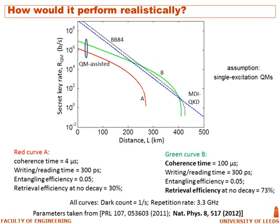In our paper, we have done a thorough key rate analysis accounting for all sorts of non-idealities that could exist in a realistic experimental setup, and we have tested our results using reported experimental values. In particular, we looked at a paper reporting a very short read/write time of 300 picoseconds, and obtained the key rate achievable with their current experimental setup. Unfortunately, it turns out that it is still short of beating the no-memory system we considered. However, if we improve some parameter values to still-achievable values within current technology, we reach curve B, which outperforms the no-memory system between 200 and 400 kilometers.